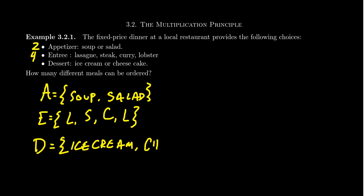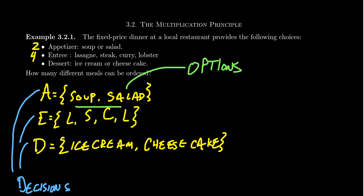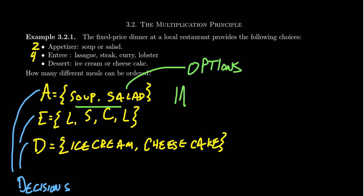Each set represents a decision that has to be made. We'll use the word 'decisions' here because 'choice' can be a little ambiguous. Inside each of these decision sets, the elements are the options available. The cardinality of set A gives the number of options for appetizers, the cardinality of E gives the number of options for the entree, and the cardinality of D gives the number of options for dessert. These cardinalities are going to affect the number of meals you can have.